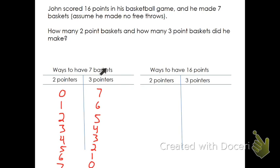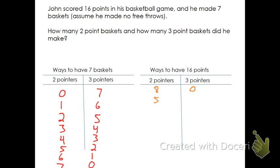Now let's look at our other criteria: how does he get 16 points? You might think: eight two-pointers, because eight times two is 16, and then no three-pointers. What if he had seven two-pointers? Seven times two is 14, but adding even one three-pointer gives 17, so seven two-pointers doesn't work. Six doesn't work either, but five does — if he had five two-pointers, that's 10 points, and he'd need six more points, which is two three-pointers: five times two plus two times three equals 16.